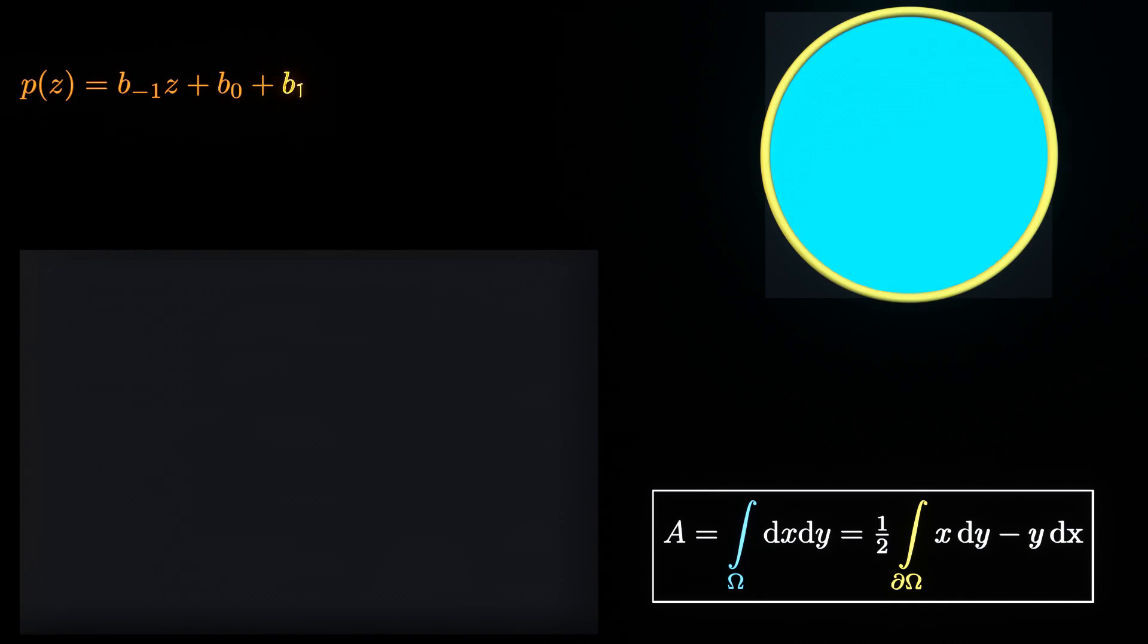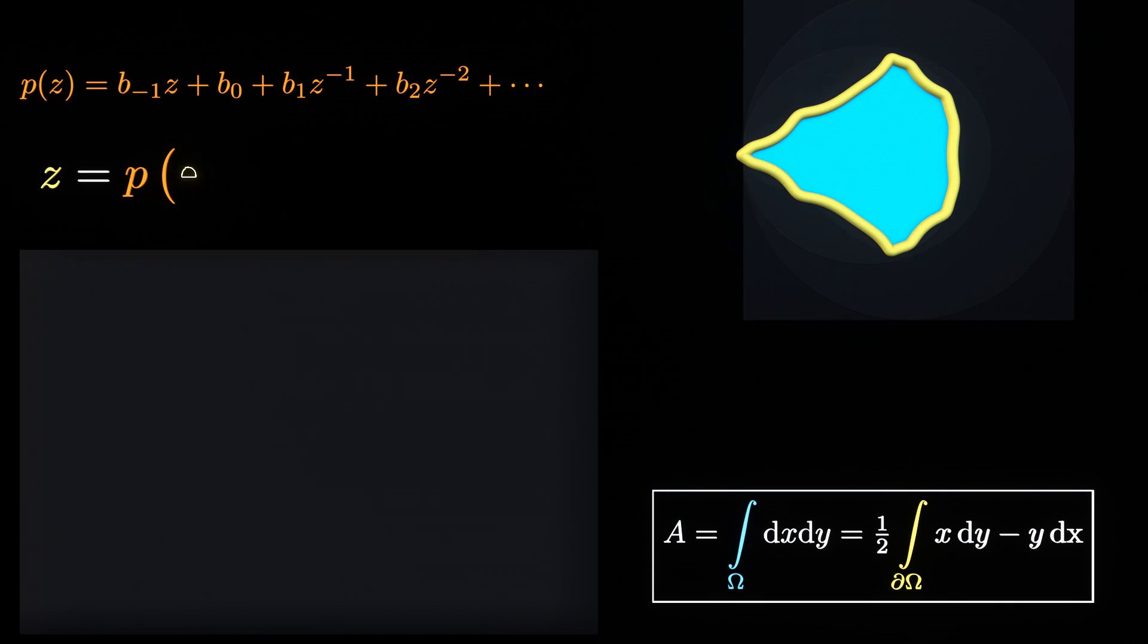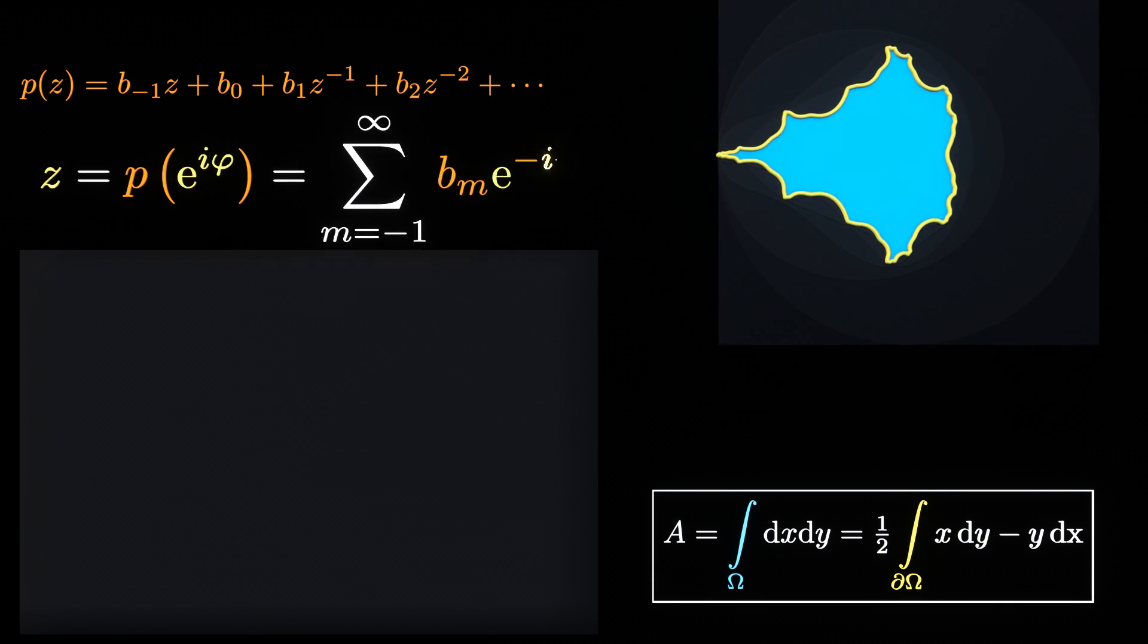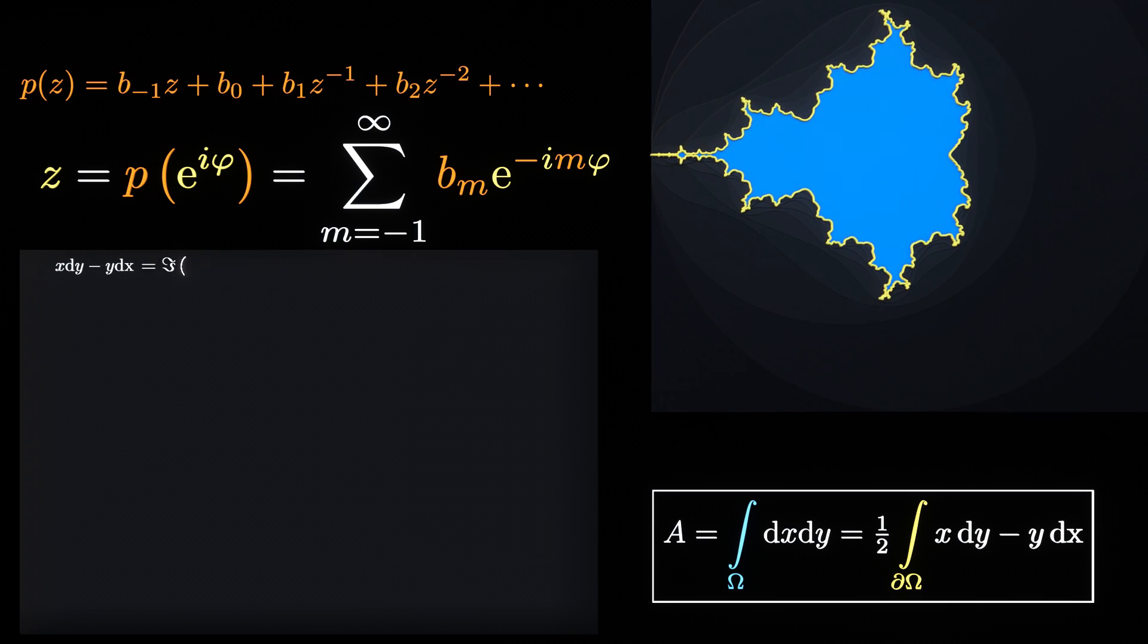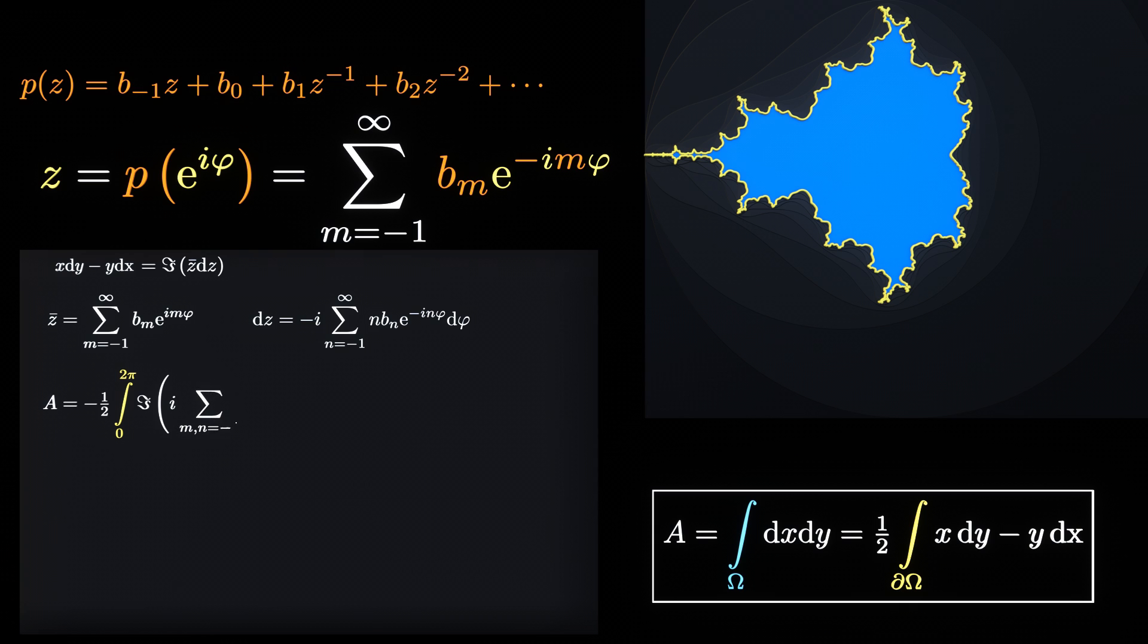The area computation for our circle mappings turn out to be most easily performed in the complex plane. The integrand is nothing but the imaginary part of the product of the conjugate of z times dz. The differential dz relates to the differential of dφ by a simple derivative of an exponential function.